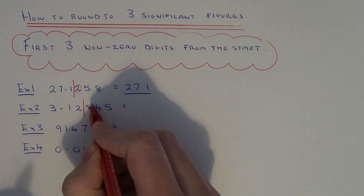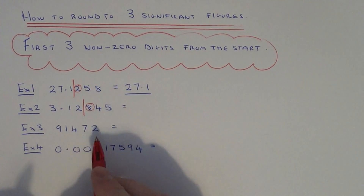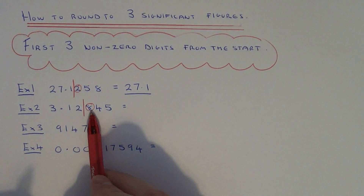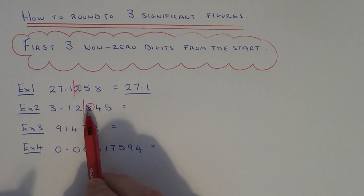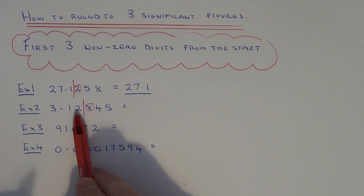We look at the next number after the line, which is an eight. Since that's five or above, we round the number up, so it's 3.13.